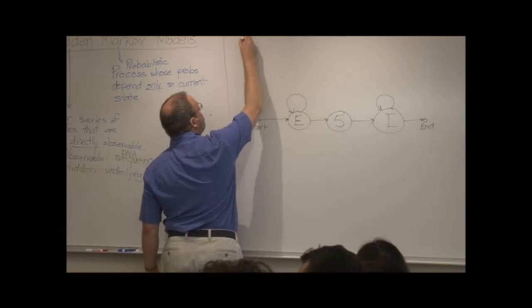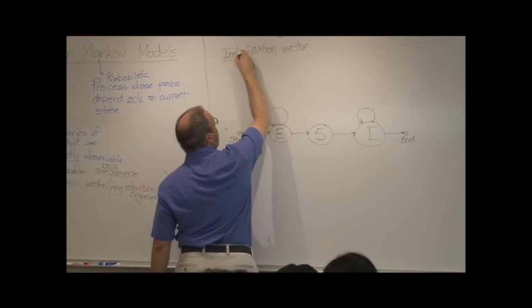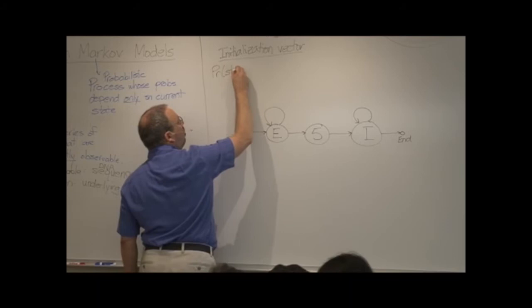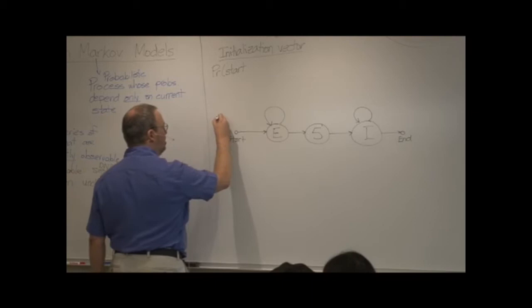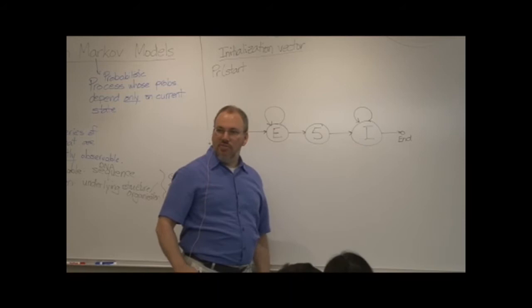So let's now describe this model with an initialization vector. An initialization vector describes the probability of starting in the different states. In this case, this is our state model. And our three different states are exon, the five prime splice site, and the intron.